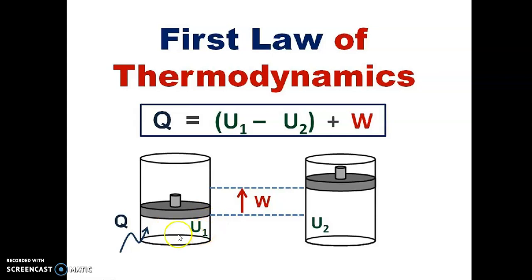Whenever the initial state, the U1 is the internal energy and then Q amount of heat is supplied to the system, then this internal energy will increase and this piston will lift from the system. This displacement we can treat as work and the internal energy has risen from U1 to U2. So, this Q is equal to U2 minus U1 plus W. That is the first law of thermodynamics.